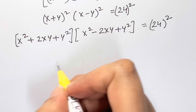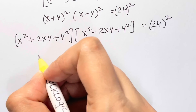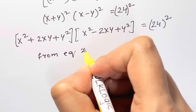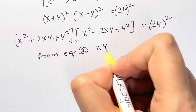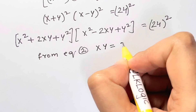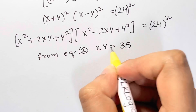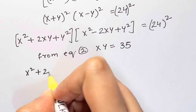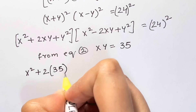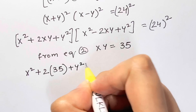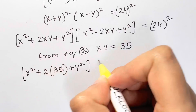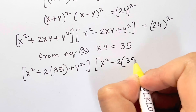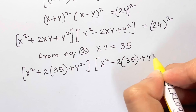From equation 2, xy = 35. I'm going to substitute this in, so I have (x² + 2×35 + y²) times (x² - 2×35 + y²) = 24².